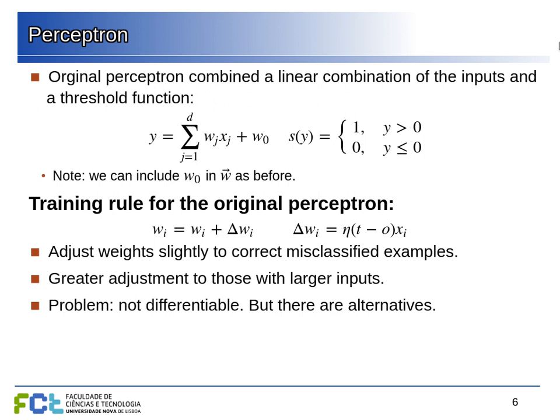This was the original perceptron, which was thought at the time — the 1950s — to be a major revolution, because we could teach machines to learn. The simple learning rule works as follows: we have a target value, which for a given example can be one or zero depending on its class. We measure the output of the neuron and the difference between the target and the output. If the neuron is firing correctly, this difference is zero and we don't change anything in the weights.